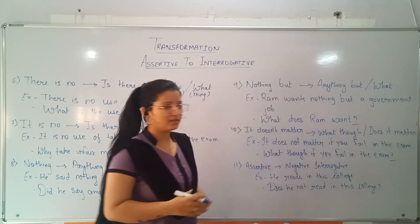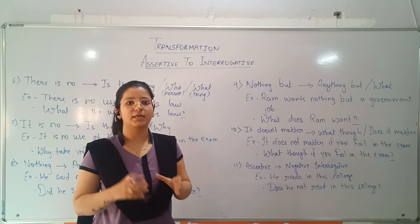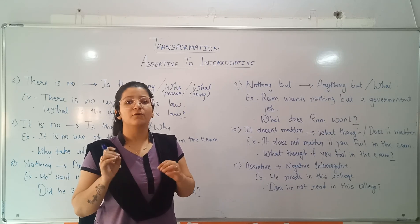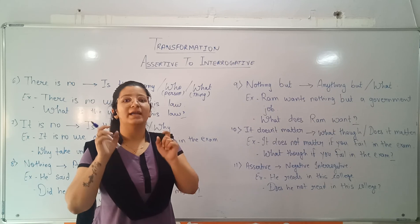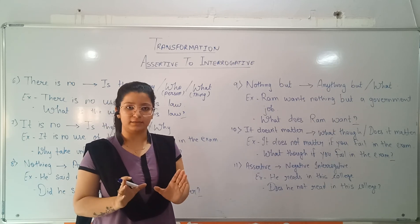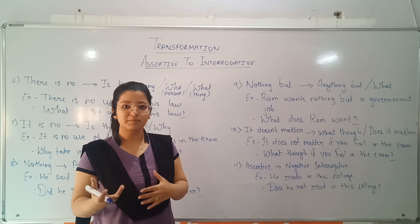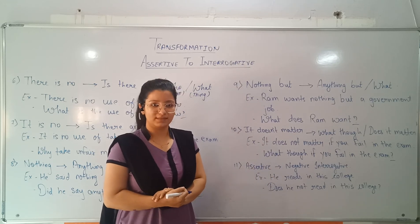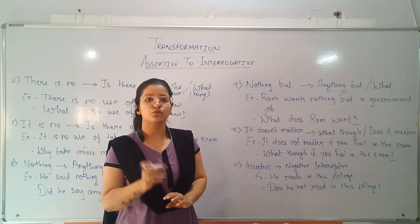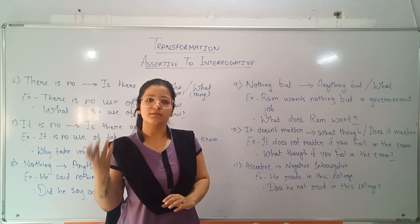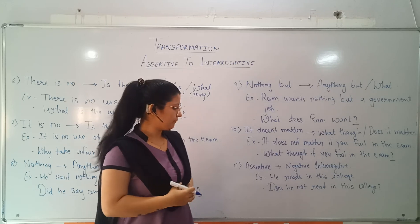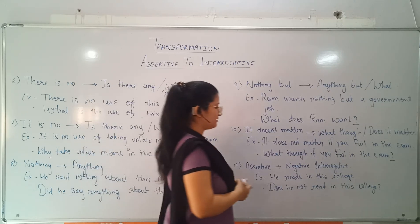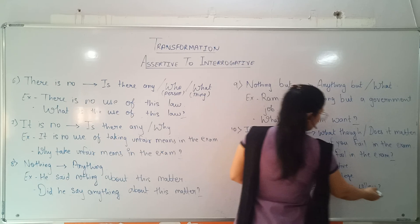The last important point is that while converting assertive to interrogative sentences, sometimes we have to change into a negative interrogative sentence. For example, 'He reads in this college.' In this sentence, we will use a negative word to make it interrogative: 'Does he not read in this college?' and we end the sentence with a question mark.